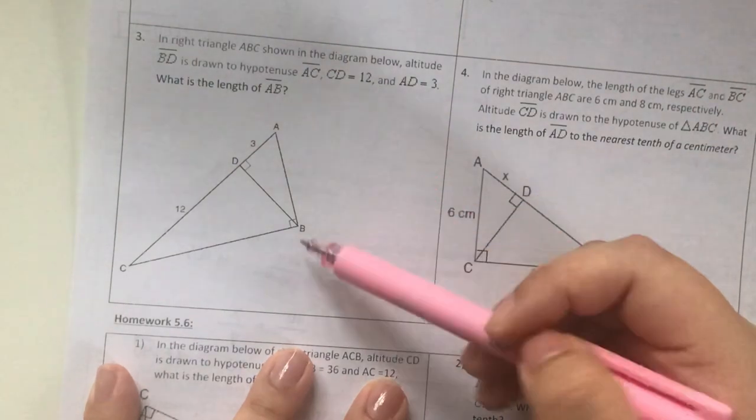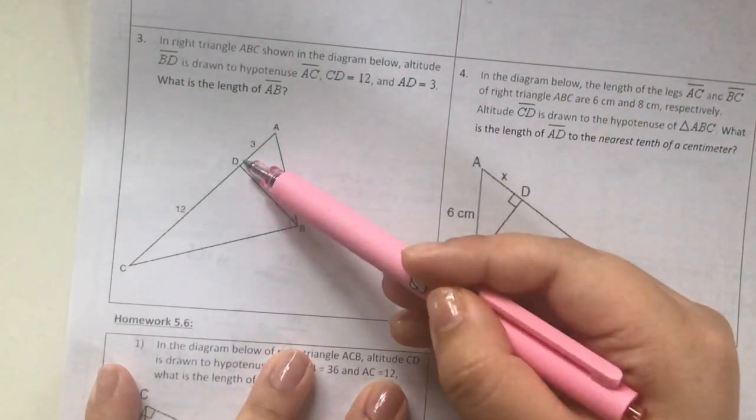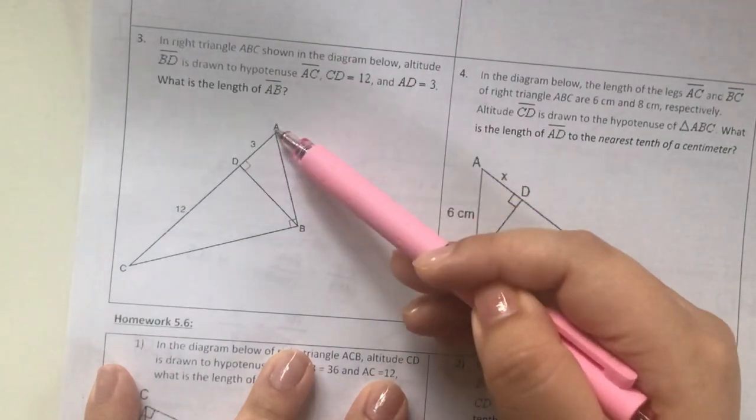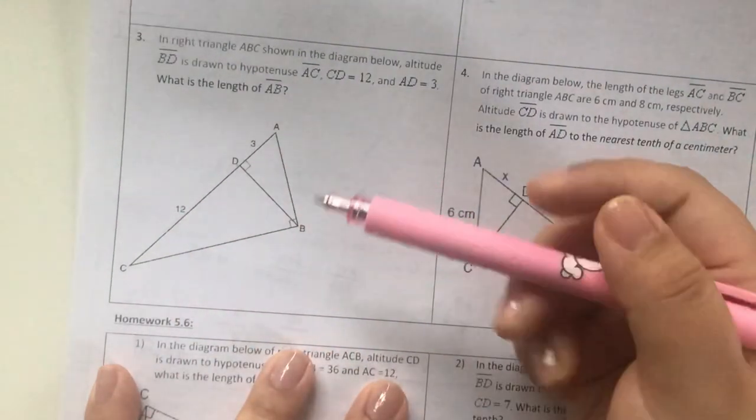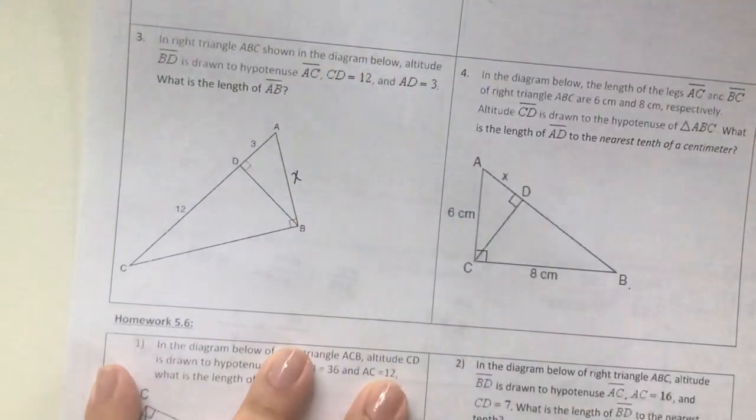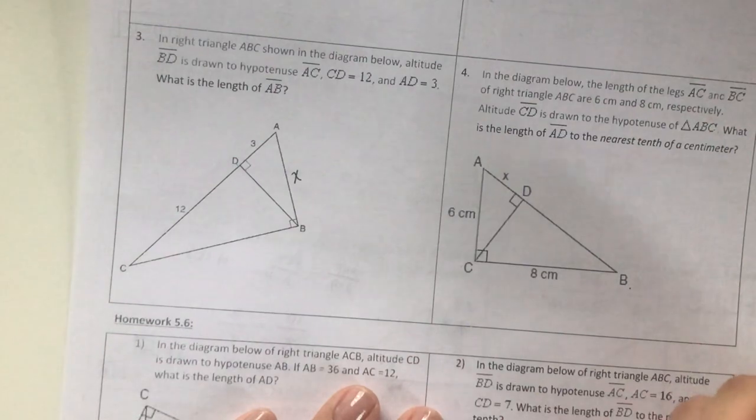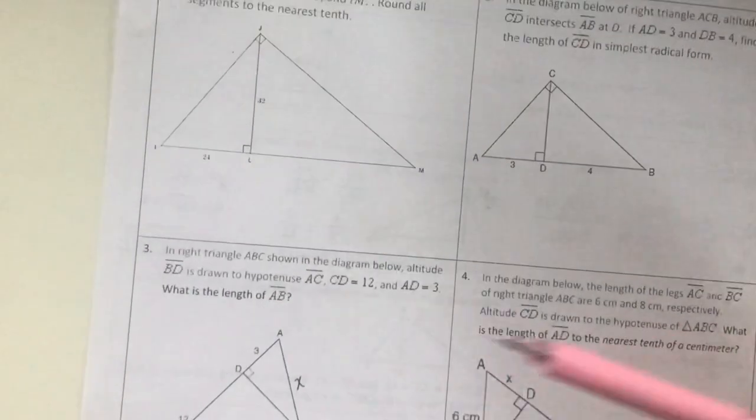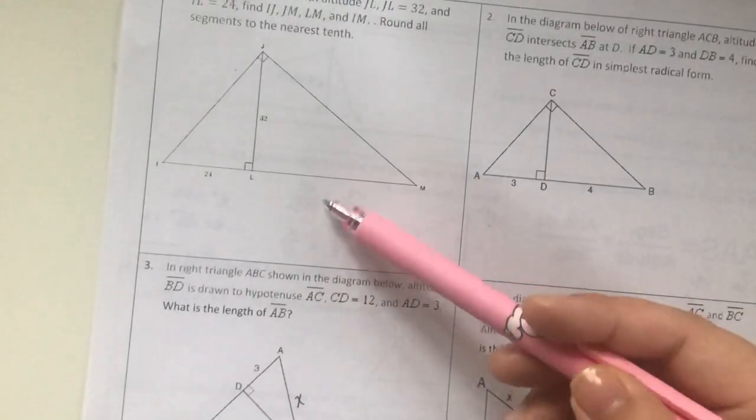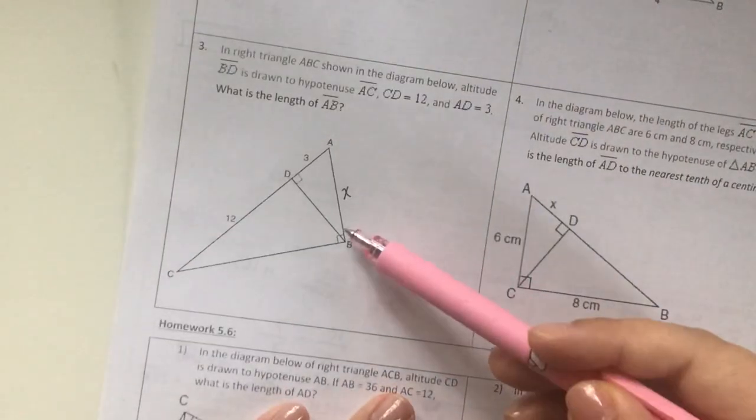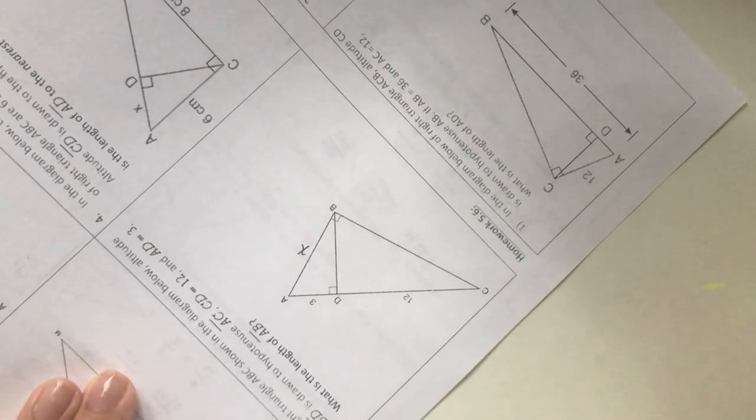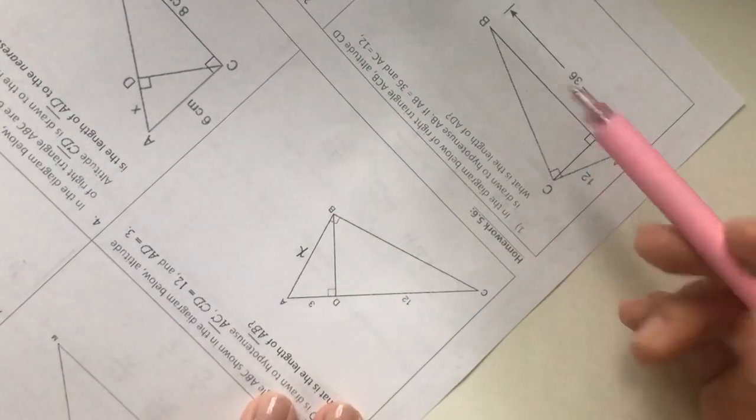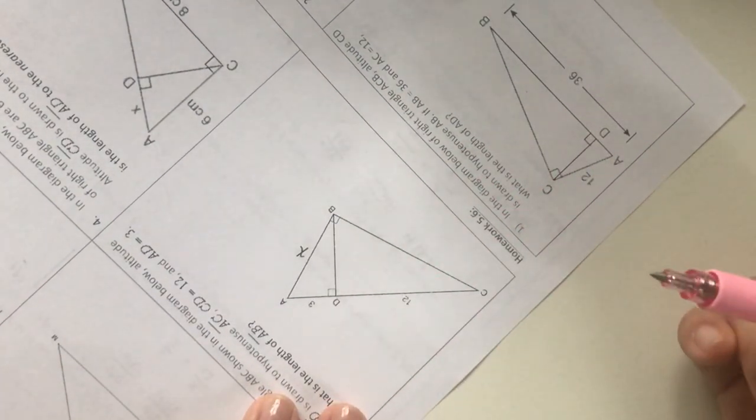Number 3 says altitude is BD. They tell me BD is the altitude. AC is this entire thing, CD is 12, AD is 3. What is line segment AB? This triangle is a little bit unusual compared to my other triangles. Usually it's like this, but number 3 the triangle is looking a little weird. On the test you can always rotate your paper into something we're used to. If we rotate the paper, this triangle is looking much better.